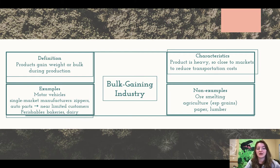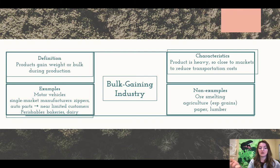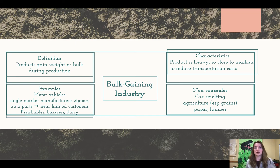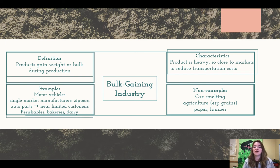Bulk gaining industry: products that gain weight or bulk during production. The product is heavy, so it is located close to markets to reduce transportation costs. Examples include motor vehicles, single-market manufacturers like zippers and auto parts sold to particular places near limited customers, and perishables like bakeries and dairy products that spoil quickly — we consider those bulk gaining and they'll be very near the market. Think back to the Von Thunen model: stuff that perishes quickly, we want close by. Non-examples are ore smelting, agriculture especially greens because they last a long time and ship well, and paper and lumber.